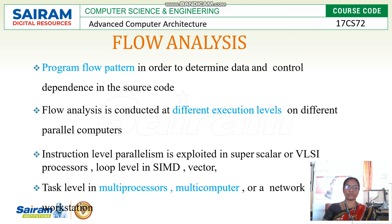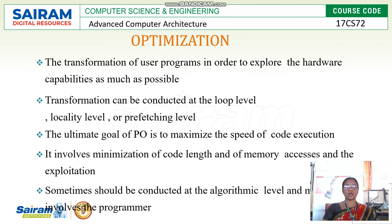The first phase is flow analysis, which covers data flow or program flow, expressed in terms of patterns to determine data and control dependencies in the source code. This is conducted at different levels: instruction-level parallelism, exploited in superscalar or VLIW processors, and loop-level in SIMD. The second phase is optimization — transformation of the user program to exploit hardware capabilities — conducted at loop level, locality level, or prefetching levels.